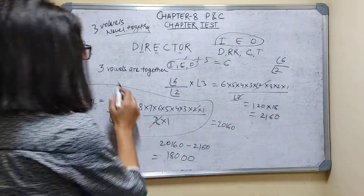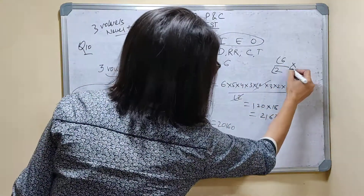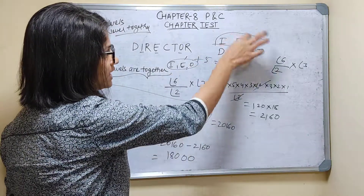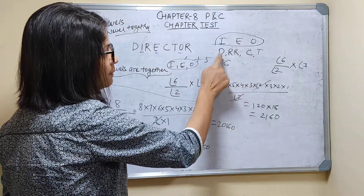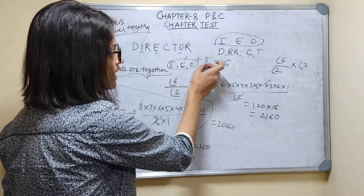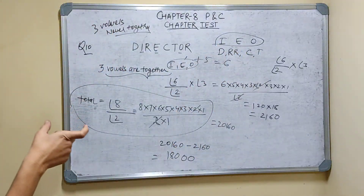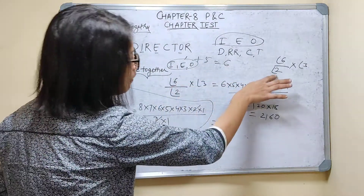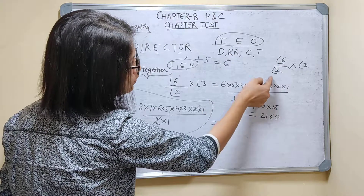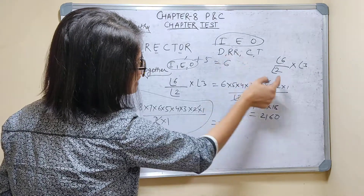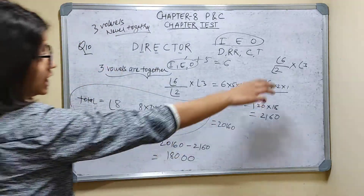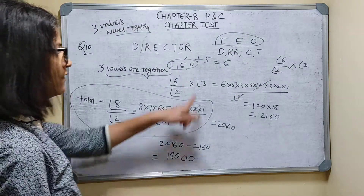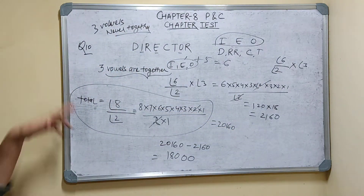So I will write 6! divided by 2! — there are two R's which are the same, that's why I am writing factorial two. And these three vowels can arrange themselves in 3! ways. So the arrangements when three vowels are together equals 6!/2! × 3! = 2160.